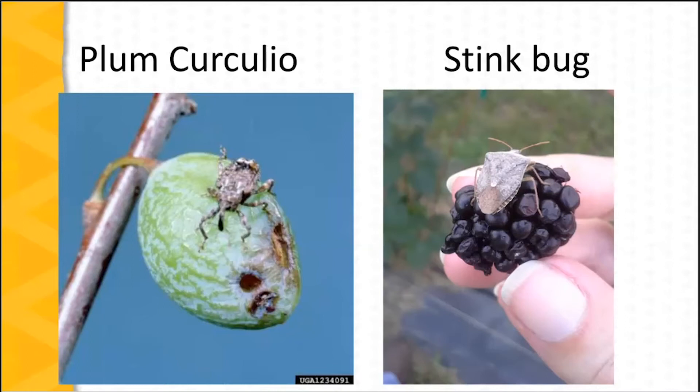Stink bugs are another example of piercing-sucking mouth parts — they suck out the plant juices. If you notice off-color areas, or as you can see in this blackberry, those druplets that are kind of collapsed, that can be feeding damage. White areas can also show up from that, and stink bugs can damage all of our fruits.